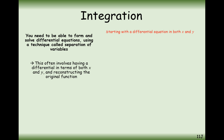Using integration we're going to solve an equation that looks like this, where we've got dy by dx on one side and we've got some function of x times some function of y on the other side. This g of y here means it might be like sine y, cos y — just some function of y.